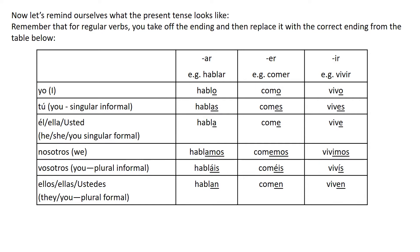Nosotros means we. Vosotros is another form of you, but remember this one is plural and informal, so this might be to a group of your friends. Ustedes is slightly different because, yes, it's plural, but this is formal — so to a group of people that you would call Mr. or Mrs. So remember to take that AR, ER or IR off and add your endings.